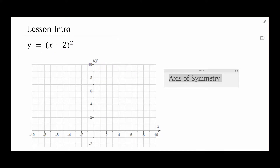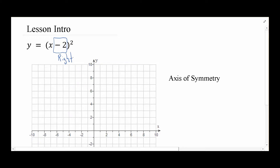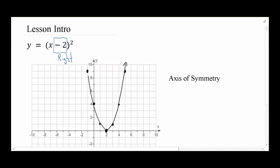When the plus or minus happens inside the parentheses before the squaring, that's a shift in the left or right direction. In the case of minus 2, that's a shift to the right. If it had been plus 2, that would be a shift to the left. So we shift to the right by 2, then do the 1-4-9 thing: up by 1, up by 4 from the vertex, up by 9 from the vertex. Connect the dots and we're good.